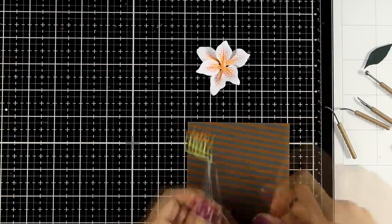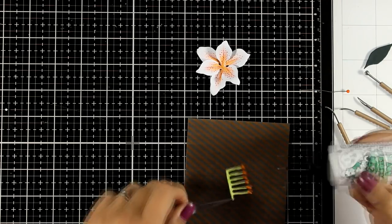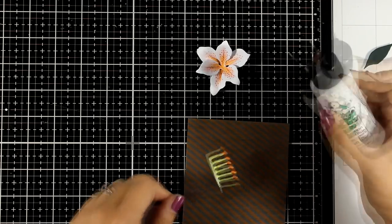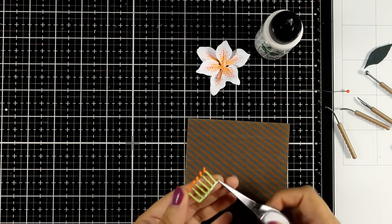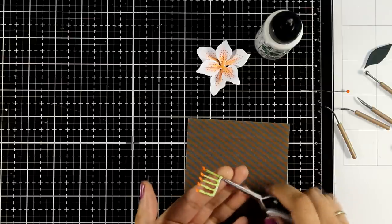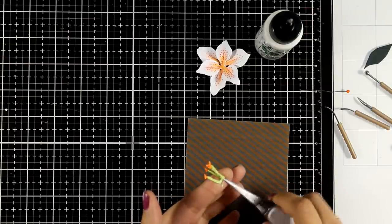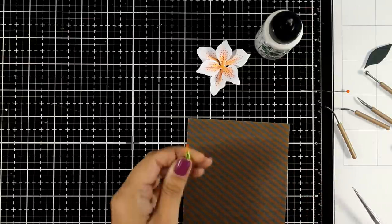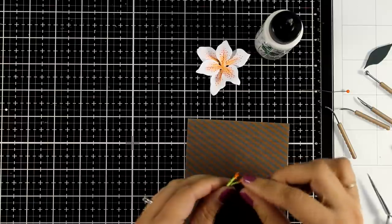So now I'm going to hold that die from the side. At the bottom I'm going to add a line of glue and then I'm going to wrap it around the tip of my tweezers. Hold it for a few seconds until the glue is set.